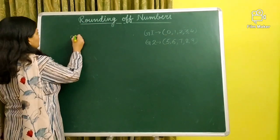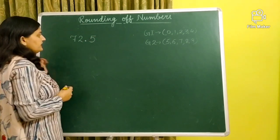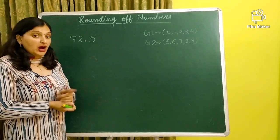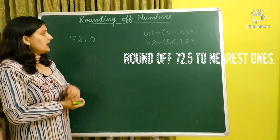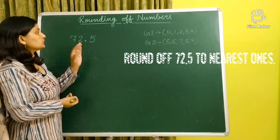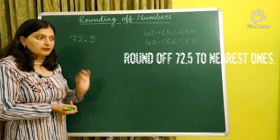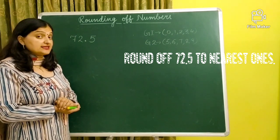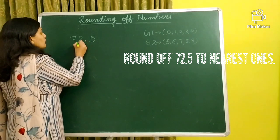Let us take a number. Suppose we have a number, 72.5. And your question is, round this number to nearest ones. You have to round nearest ones. It means, you have to underline that number whose place is ones. That is, find your place. So, our place is ones.